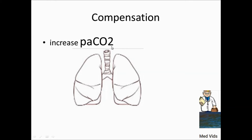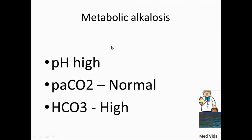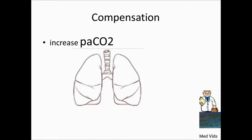The compensatory organ for metabolic alkalosis is the lung. The lung compensates by increasing PaCO2 — the patient will hypoventilate to retain carbon dioxide. This section is just to illustrate how to identify and understand the compensation in metabolic alkalosis.